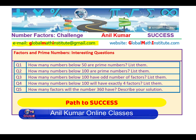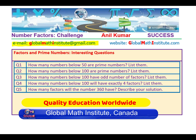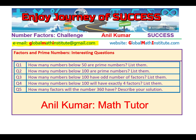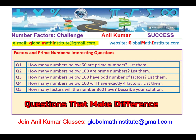The five questions are: How many numbers below 50 are prime numbers? List them. How many numbers below 100 are prime numbers? List them. How many numbers below 100 have an odd number of factors? List them. How many numbers below 100 have exactly four factors? This is an extremely difficult question and even high school students will find it very difficult to answer. Question number five is: how many factors will the number 360 have? There are a couple of ways to do it — find the factors, and there could be a shortcut method also.